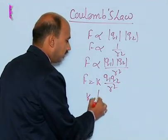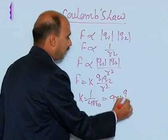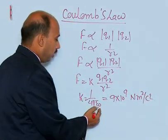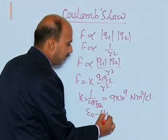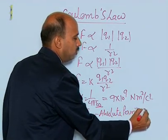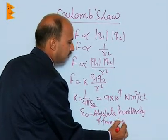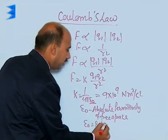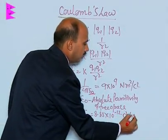The value of K is 1 upon 4π epsilon naught, which equals 9 × 10⁹ Newton meter square per coulomb square. Here epsilon naught is called the absolute permittivity of free space. The value of epsilon naught is 8.85 × 10⁻¹² coulomb square per Newton meter square.